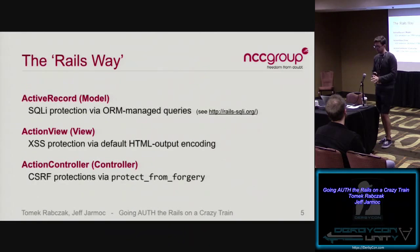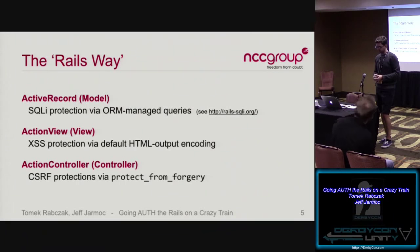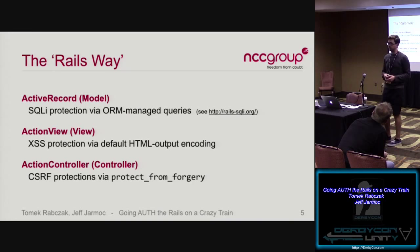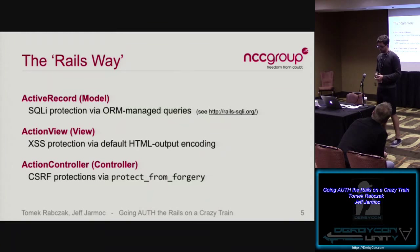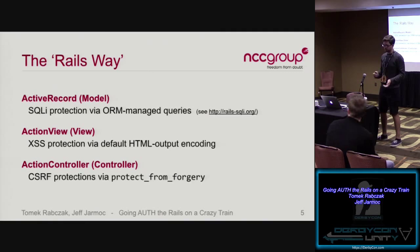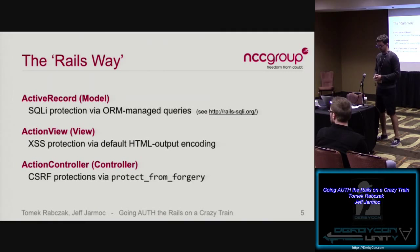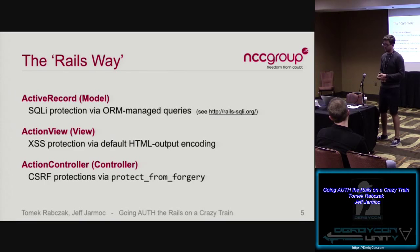Rails provides a lot of protections for developers by default. ActiveRecord gives SQL protection by default, though railssqli.org documents how you can still get SQL injection. ActionView HTML-encodes user input by default, providing XSS protection. ActionController gives CSRF protection through things like 'protect_from_forgery.' There are ways to get each of these wrong, but using the framework as intended gets you solid defaults.